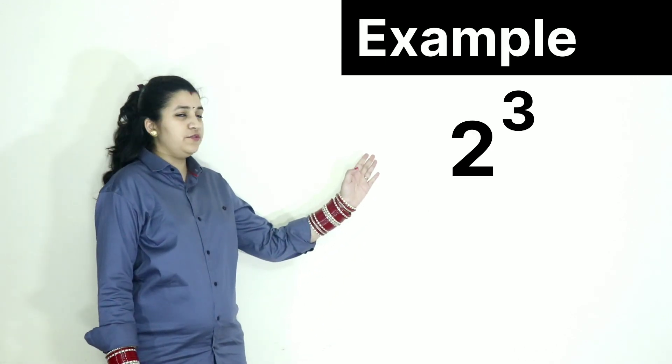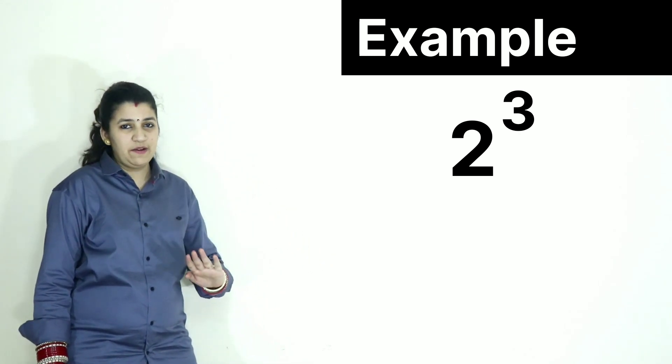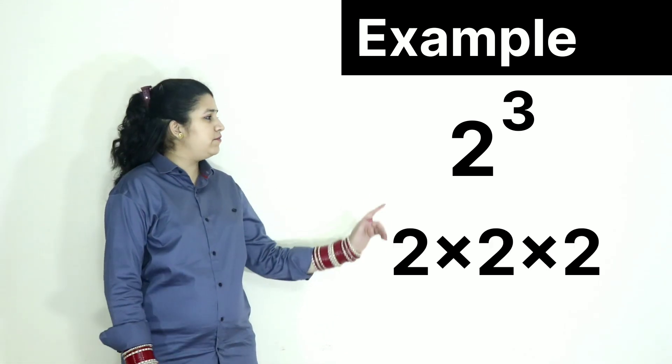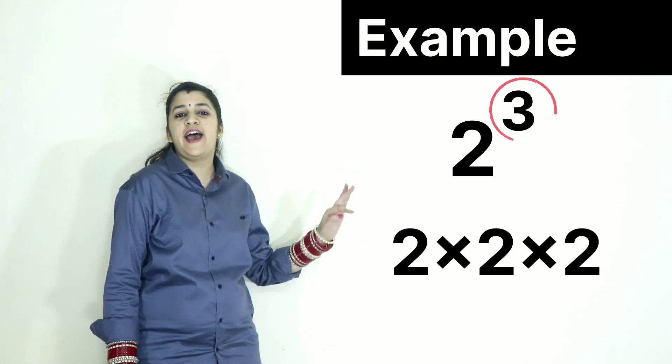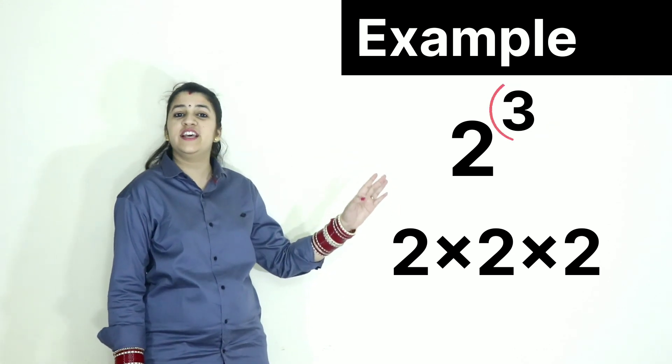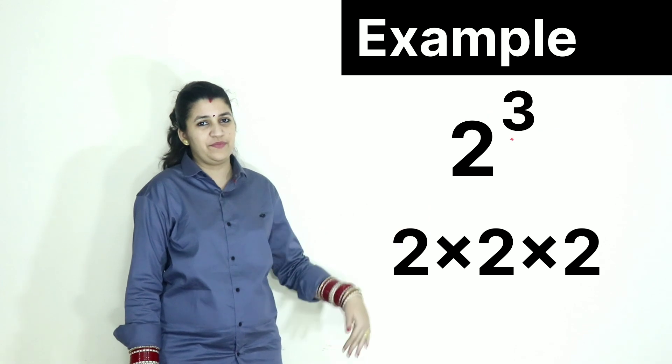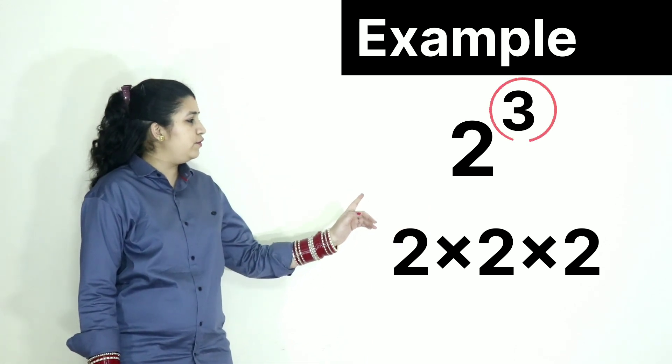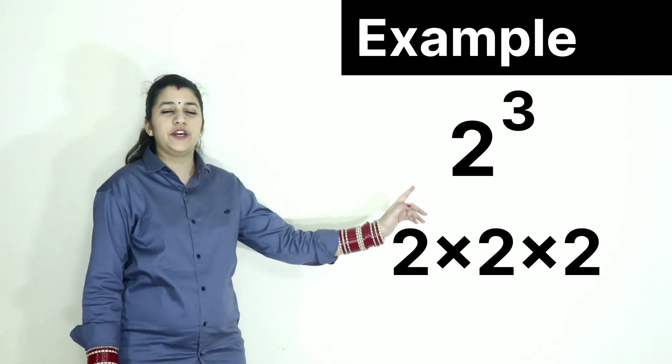Now let us take a small example: 2 raised to the power 3. Here we have to multiply the number 2. How many times? 3 times, because the exponent or the power here is 3. So what do you have to do? 2 into 2 into 2.